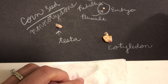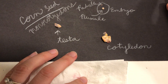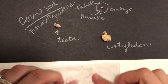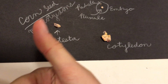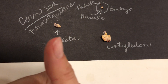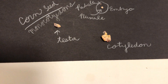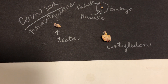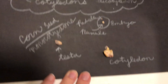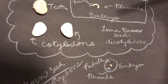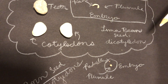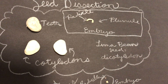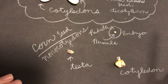We know that if we have a monocotyledon, our plant will have parallel veins, fasciculate roots, and flower parts in multiples of three. But our dicotyledons will have flowers in pairs of four or five, tap roots, and reticulate veins. I hope you enjoyed some seed dissection today.